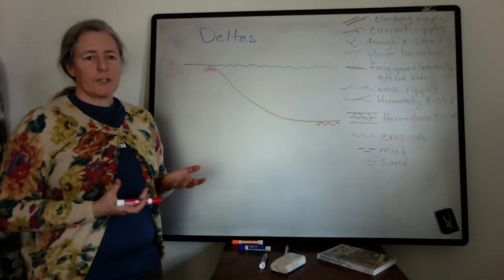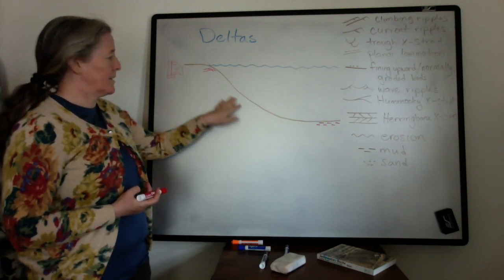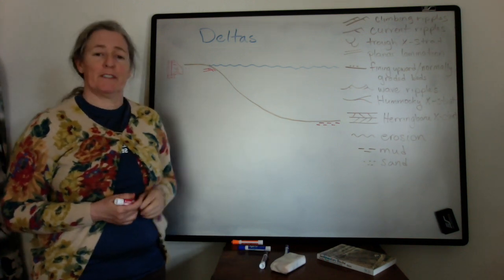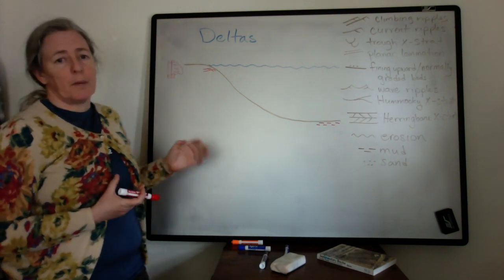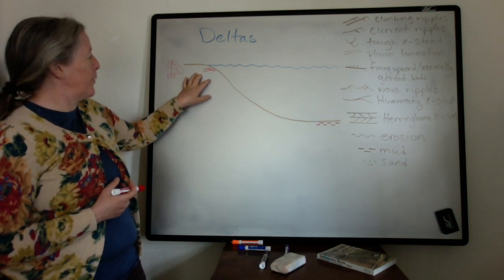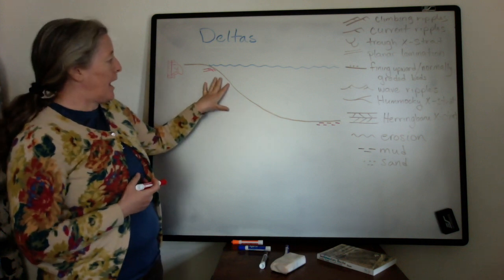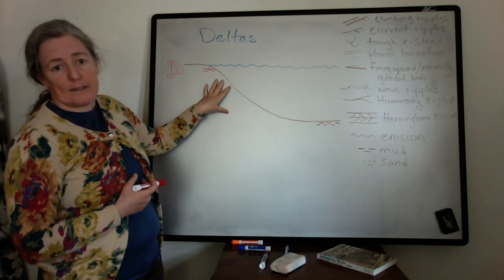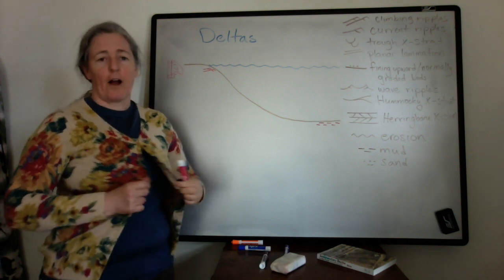Sedimentary structures in deltas vary from the delta plain to the delta slope to the pro-delta. I'm going to talk in this video about different processes that transport the sediment from the mouth of the river to the deeper water and how that affects the accumulation of sediment and how we see that in the rock record.